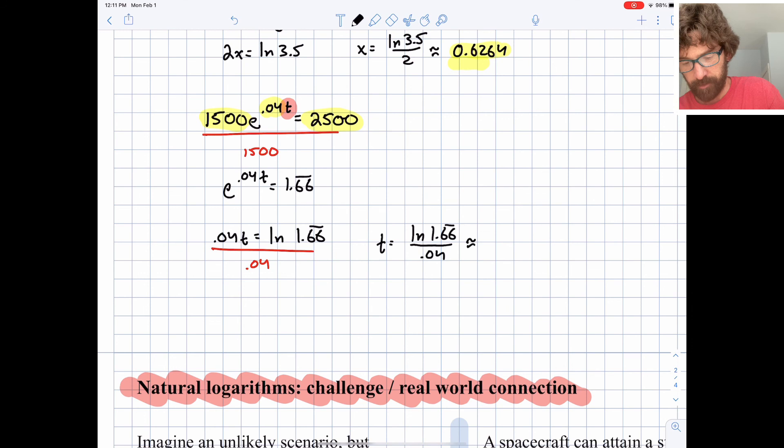And I get approximately 12.77 and the implication here is that that would be years. Think about if that makes sense. Does it make sense for our money at 4% interest to grow from 1,500 to $2,500 over the course of about 13 years? And I think it does make sense to do that.